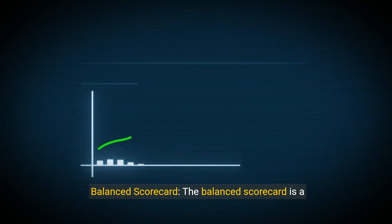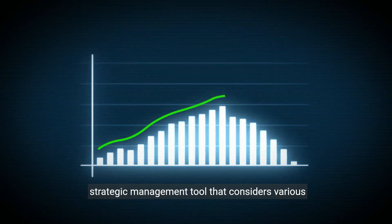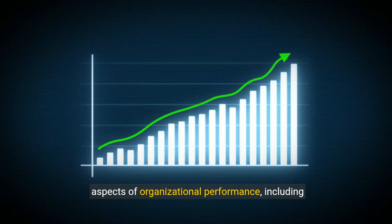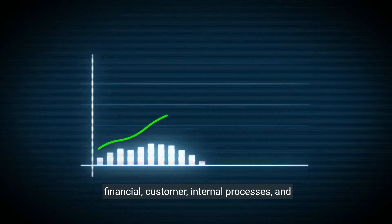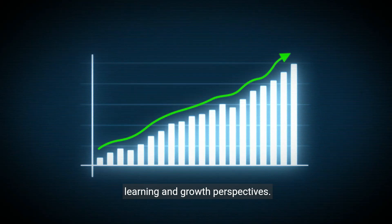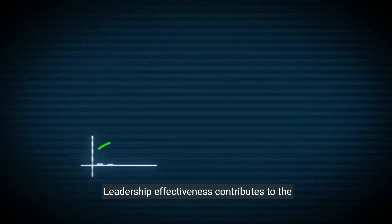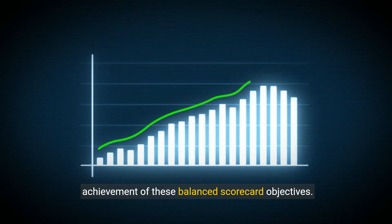8. Balanced scorecard. The balanced scorecard is a strategic management tool that considers various aspects of organizational performance, including financial, customer, internal processes, and learning and growth perspectives. Leadership effectiveness contributes to the achievement of these balanced scorecard objectives.